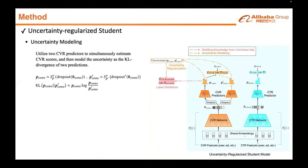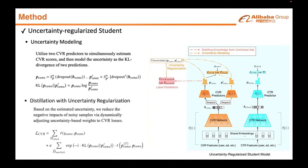Motivated by the above experiment, our uncertainty-regularized student model contains two CVR predictors to simultaneously estimate CVR, and models the uncertainty as the inconsistency between them. Based on the estimated uncertainty for each unclicked sample, we reduce the negative impacts of noisy unclicked samples during distillation by dynamically adjusting uncertainty-based weights on their losses. We also add a regularization loss term for uncertainty estimation.